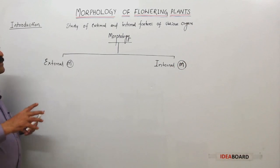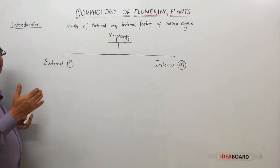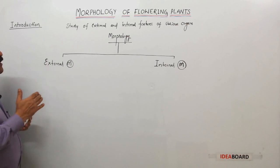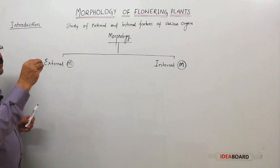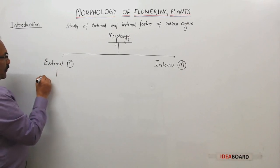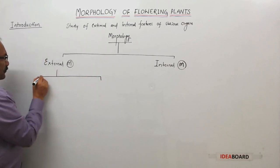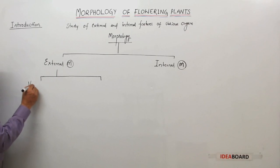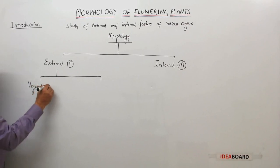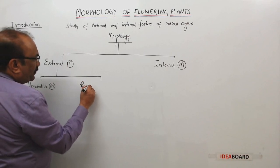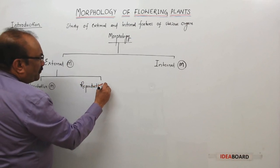What is external morphology? This is the study of external features of different organs of plants. So, the study of external features of various organs of plants is called external morphology. This is further divided into two branches: one is vegetative morphology, and the second one is reproductive morphology.